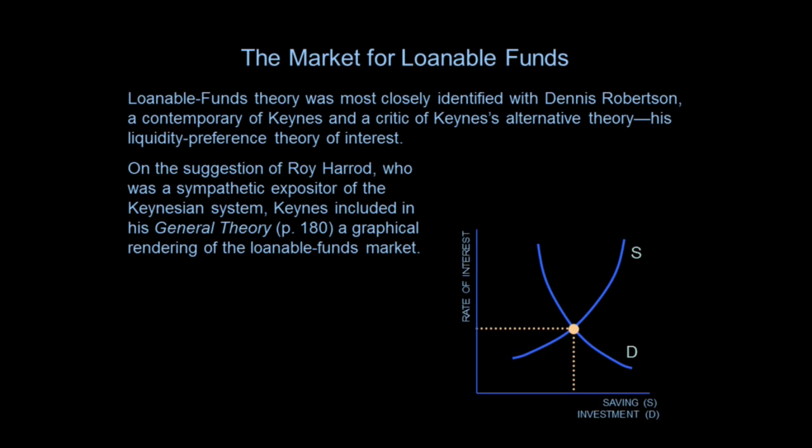Here's something to think about. This diagram, and this diagram alone, appears in the General Theory — it's the only diagram in the General Theory, and Keynes put it in at Roy Harrod's suggestion. Harrod read the manuscript and told Keynes it looked like he was throwing out the loanable funds theory. Keynes said yes, out. Harrod said if that's what you're doing, you better make that clear to your reader because otherwise they won't believe you. Keynes took the advice — so he put the diagram in and threw it out. It appears on page 180.